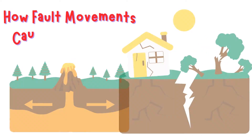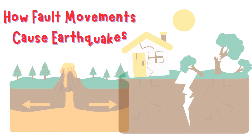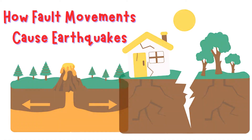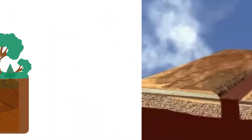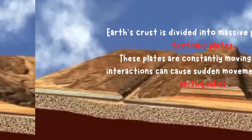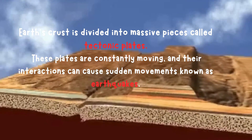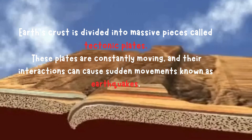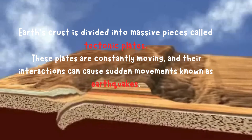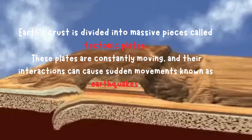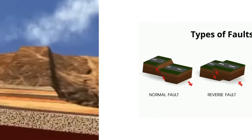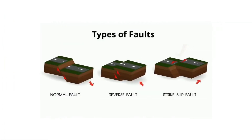Welcome to our exploration of the dynamic Earth. Today we're diving into the fascinating world of earthquakes and the faults that cause them. Earth's crust is divided into massive pieces called tectonic plates. These plates are constantly moving, and their interactions can cause sudden movements known as earthquakes. Let's explore three main types of faults where these movements happen.